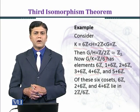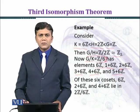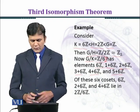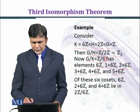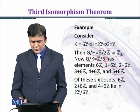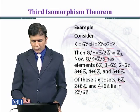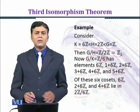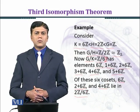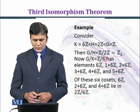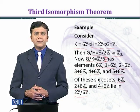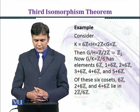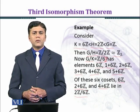So we have represented Z/6Z in the form of cosets. Of these six cosets, 6Z, 2 plus 6Z, and 4 plus 6Z lie in 2Z. So 2Z over 6Z — which is H over K — has a total of three cosets: 6Z, 2 plus 6Z, and 4 plus 6Z.